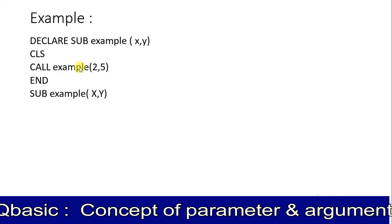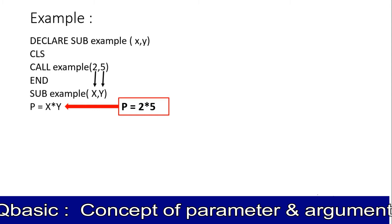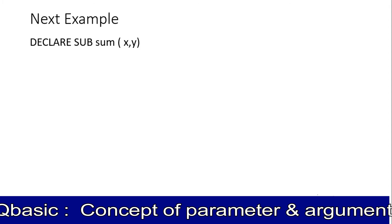Basically, the third line of the definition was added to the sub procedure example. Columns are called with values 2 and 5 — calling the main module over here in brackets. That's how the argument goes to its respective parameter. The value supplied to the variable yux — yux is the parameter. Two goes to yux, five goes to y. So two times five equals ten.